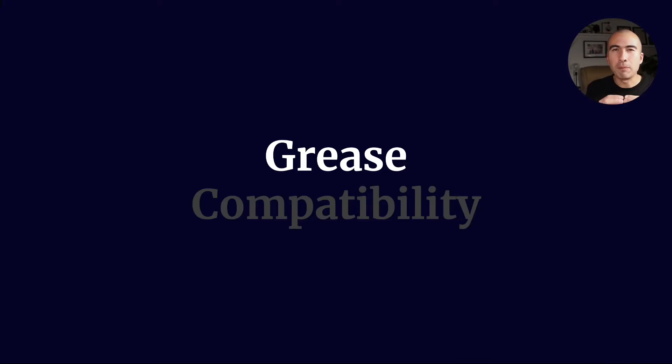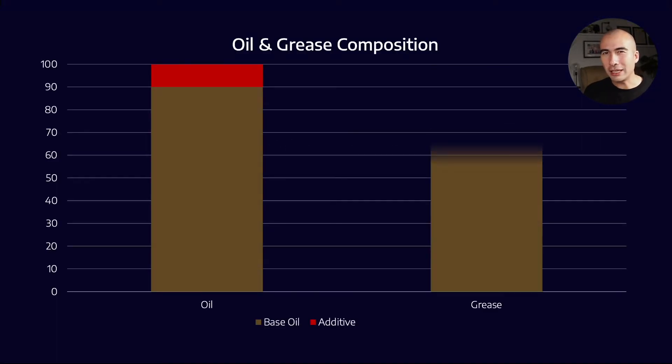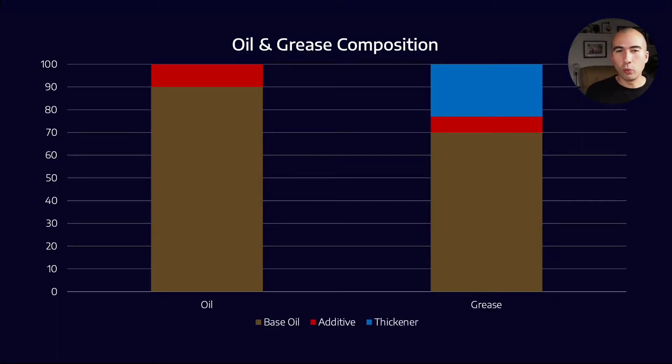If we're just discussing the compatibility of the thickener, remember, that's not really the overall picture. What distinguishes an oil from a grease is its thickener, which can typically make up anywhere between 10% and 30% of the overall grease composition.